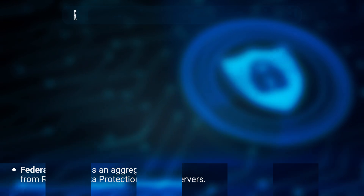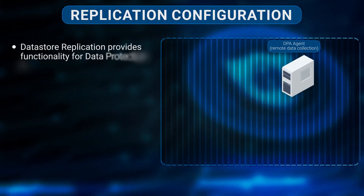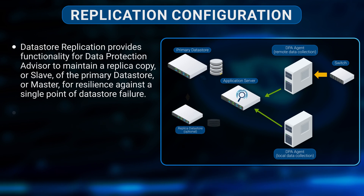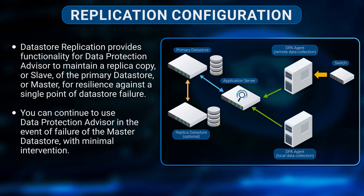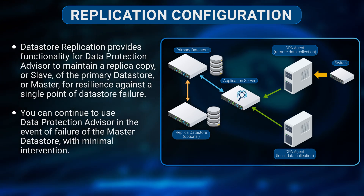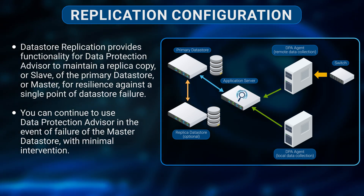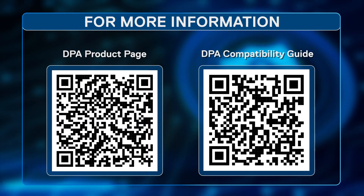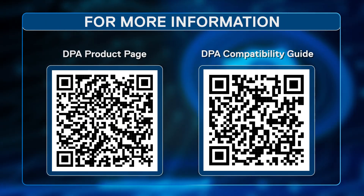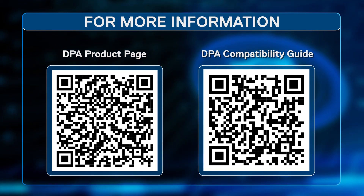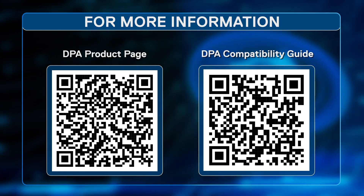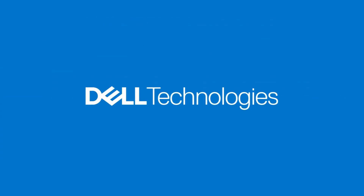The last configuration type is data store replication, which provides functionality for DPA to maintain a replica copy of the primary data store for resilience against a single point of failure. You can continue to use DPA in the event of a failure of the primary data store with minimal intervention. Note that DPA is ending support for the application clustering feature after version 19.7. For more information, check the links below to the DPA product page and DPA compatibility guide. This was a brief introduction to Data Protection Advisor from Dell Technologies.